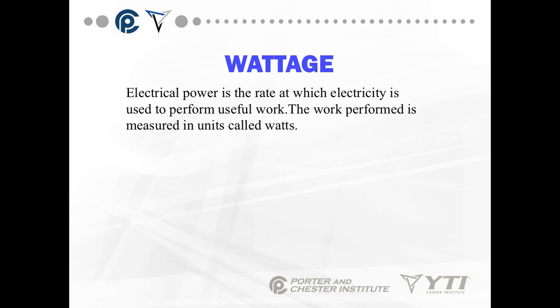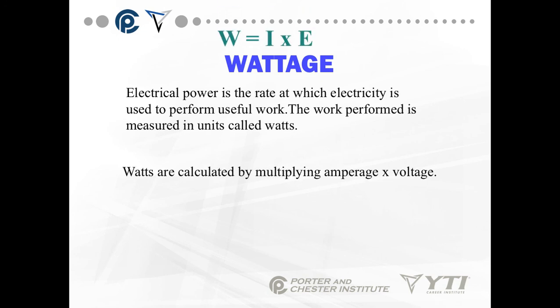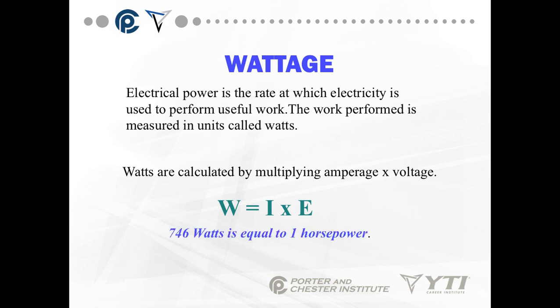Wattage is the work that's being performed. Wattage is a measurement of electrical power — the rate at which electricity is being used to perform useful work, measured in units called watts. This is how your power company bills you. Watts are calculated by measuring amperage times voltage. 746 watts is equal to 1 horsepower, which is another measurement of work — mechanical work. Watts equals I times E.